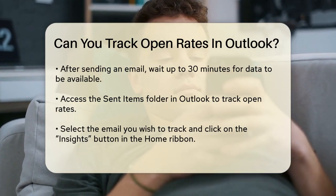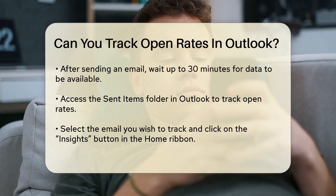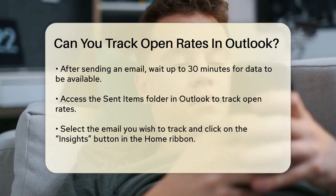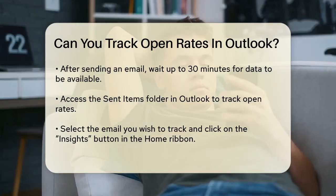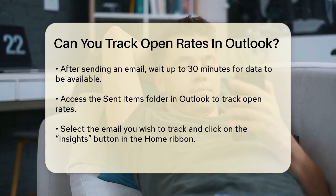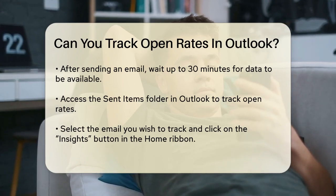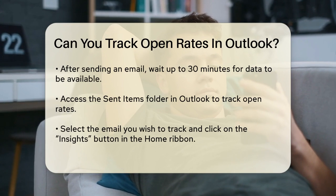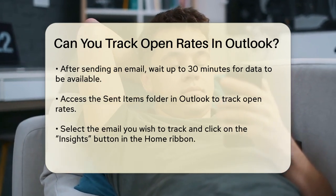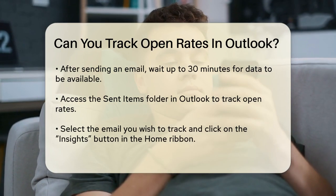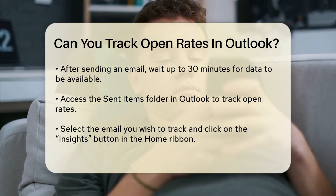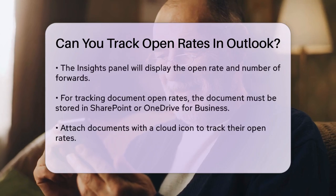Here's how you can track your email open rates using Insights. After sending your email, wait up to 30 minutes — this is how long it takes for the data to become available. Then go to your Sent Items folder in Outlook, select the email you want to track, and click on the Insights button on the Home ribbon. This will open a panel on the right-hand side showing you the open rate and the number of forwards.